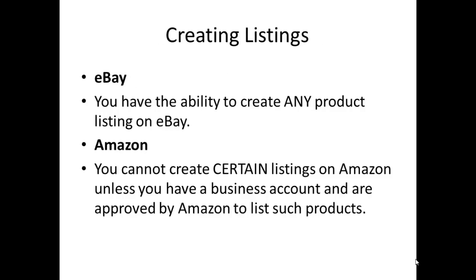Creating listings. On eBay, you have the ability to create any product listing that you want. On Amazon, you cannot create certain listings unless you have a business account and are approved by Amazon to list such products. As an example, sports collectibles — you cannot list sports collectibles unless you are approved by Amazon.